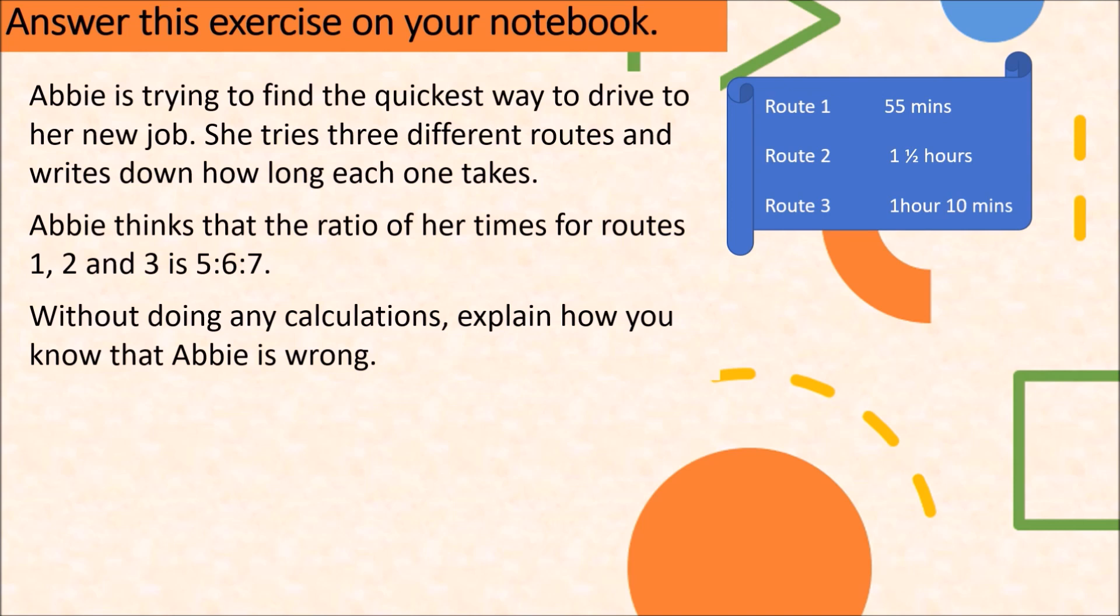Let's check your work. Abbie is trying to find the quickest way to drive to her new job. She tries three different routes and writes down how long each one takes. On her notes, she wrote: Route 1 is 55 minutes, Route 2 takes 1 and a half hour, and Route 3 is 1 hour and 10 minutes. Abbie thinks that the ratio of her times for routes 1, 2, and 3 is 5 to 6 to 7. Without any calculation, how can we say that Abbie is wrong?